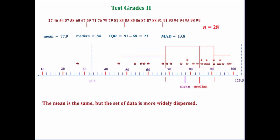Now let's say you have that same class and you gave a second test — still 28 students. But notice some of the differences in this data. I deliberately set it up so that the mean was exactly the same: 77.9 again. Our median is 84. Our values for the third and first quartiles were 91 and 68, so our interquartile range is 23.